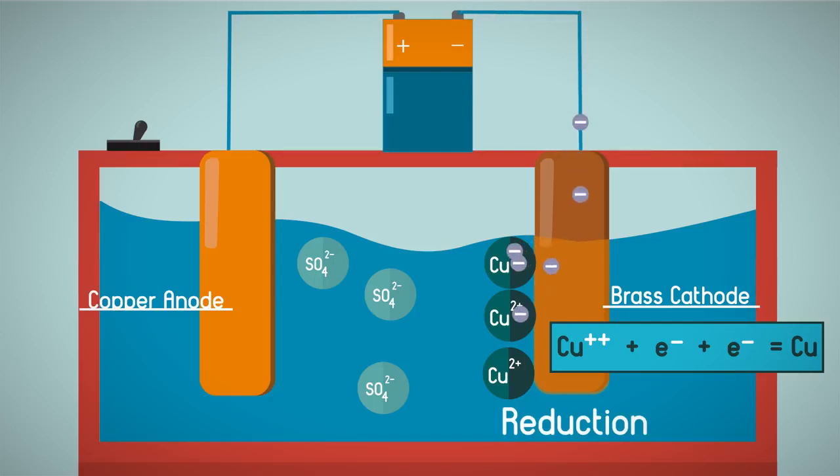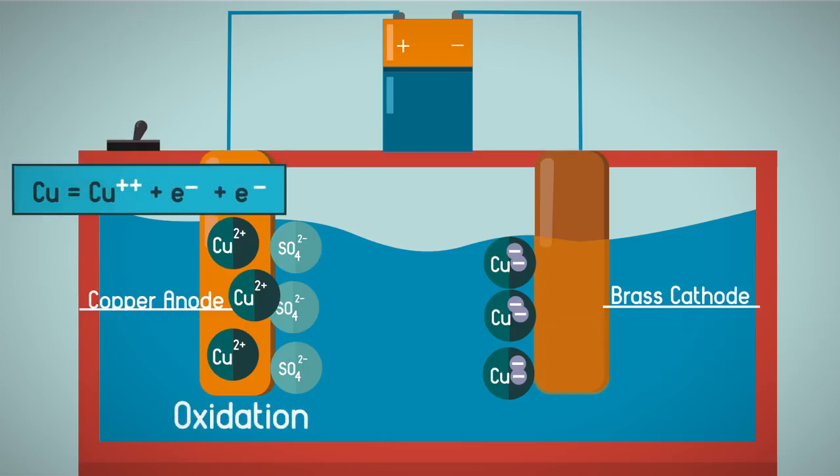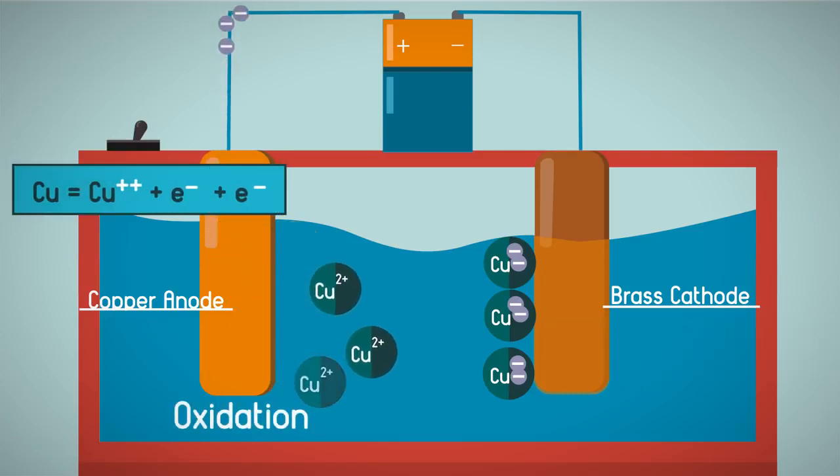The sulfate ions are negatively charged and so are attracted to the positively charged copper anode. The current supplied to the anode causes the copper atoms to oxidize, which is lose electrons, and then dissolve into the electrolyte solution.